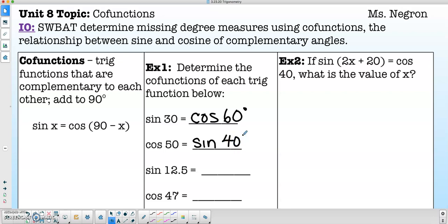Moving on to sine of 12.5, co-function will be cosine. 90 minus 12.5 is 77.5.